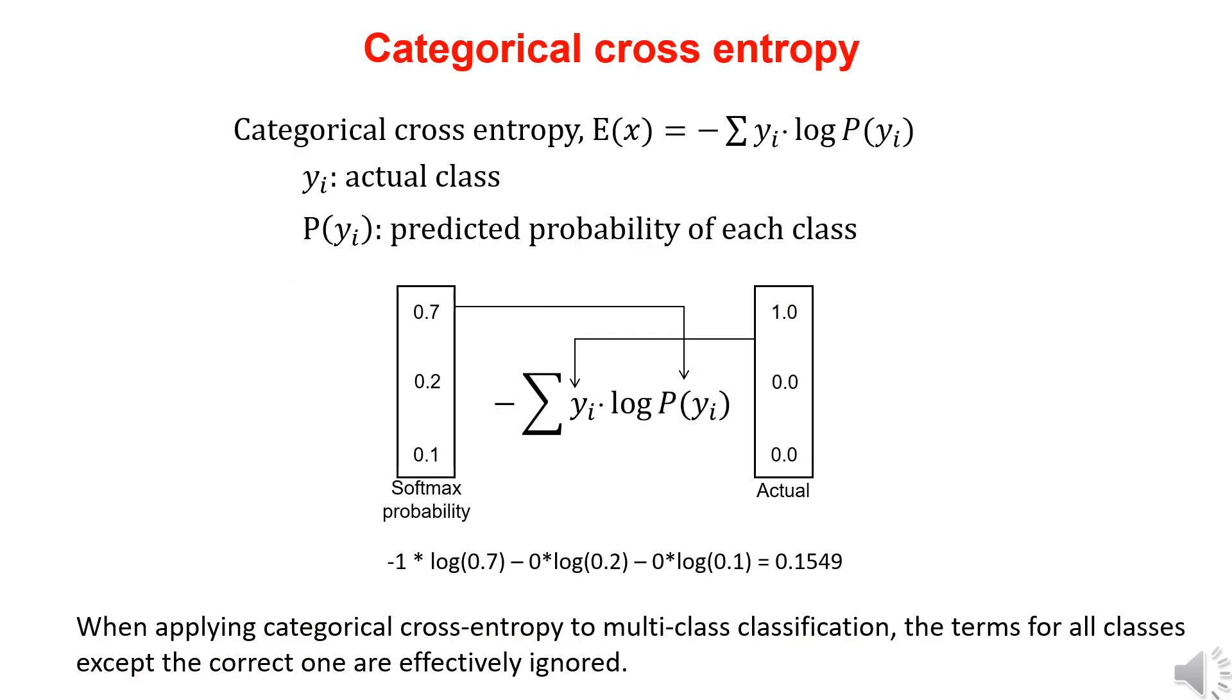In multi-class classification, we use categorical cross-entropy as the loss function. This equation represents categorical cross-entropy, where Y represents the actual class, and P(Y) represents the predicted probability. So, we substitute the one-hot encoded values into Y, and the probabilities calculated through softmax into P(Y).